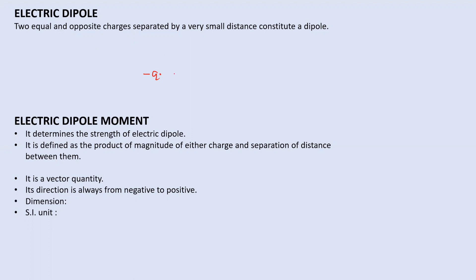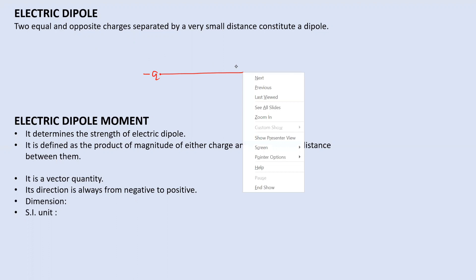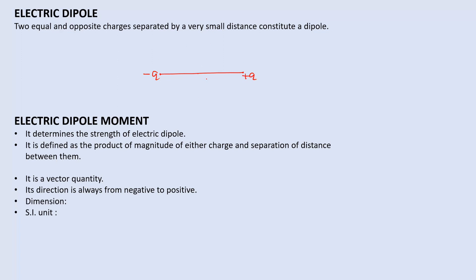Suppose I'm considering here a negative charge, and at another point I'm considering a charge plus q. So one is minus, one is plus — equal and opposite charges. They are separated by a very small distance, and then they will constitute a dipole.